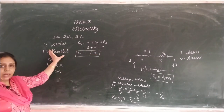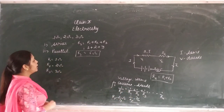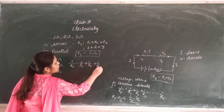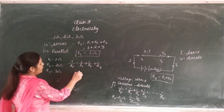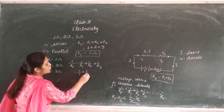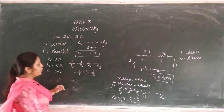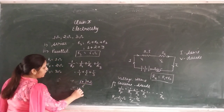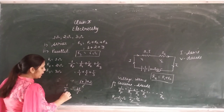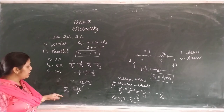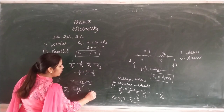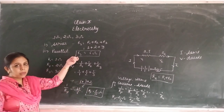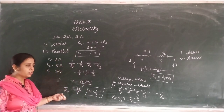Now find the parallel combination. 1 upon RP equals 1 by R1 plus 1 by R2 plus 1 by R3. Put values: 1 upon 1 plus 1 upon 2 plus 1 upon 3. Take LCM — that is 6. So it becomes 6 plus 3 plus 2 over 6, which is 11 by 6. Here we got 1 upon RP. We need RP, so it comes out to be RP equals 6 by 11 ohm. First answer was for series combination — 6 ohm. Second is for parallel combination — 6/11 ohm. I think this was easy.